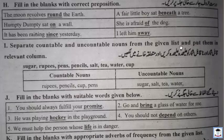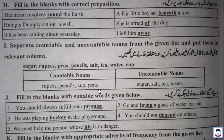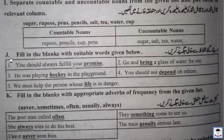Exercise I: Separate countable and uncountable nouns from the given list and put them in the relevant column. List: sugar, rupee, pen, pencil, salt, tea, water, cup. Countable nouns are: rupees, pencils, cup, pens. Uncountable nouns are: sugar, salt, tea, water.